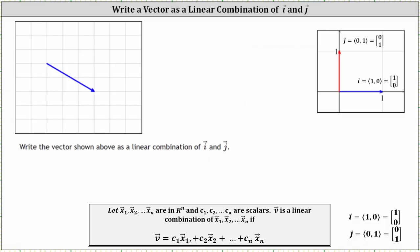Write the vector shown above as a linear combination of vector i and vector j, where vector i is a unit vector in the positive x direction, and vector j is a unit vector in the positive y direction.